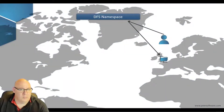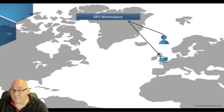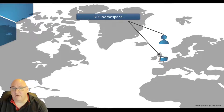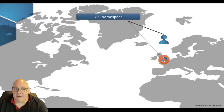Let's look at that a little more closely. Let's say that users at the London data centre are being directed by the namespace to a folder target there. Under normal conditions they have access to the data and can work away quite happily. However, if that folder target goes offline, there's a problem with access and the users have to stop their work.